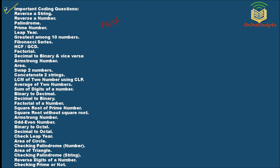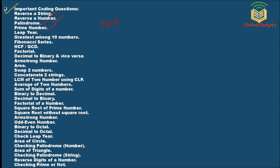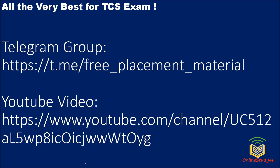Here are the most frequently asked coding questions in TCS examinations: reverse string, reverse number, palindrome, prime number, leap year, greatest among ten numbers, Fibonacci series, HCF/GCD, factorial, decimal to binary and vice versa, Armstrong number, area, swap two numbers, concatenate two strings, LCM, average, sum of digits, binary to decimal, decimal to binary, factorial of a number, square root, Armstrong number, odd/even number, binary to octal, decimal to octal, area of circle, palindrome number, area of triangle, palindrome string, reverse digit of a number, and checking prime number.